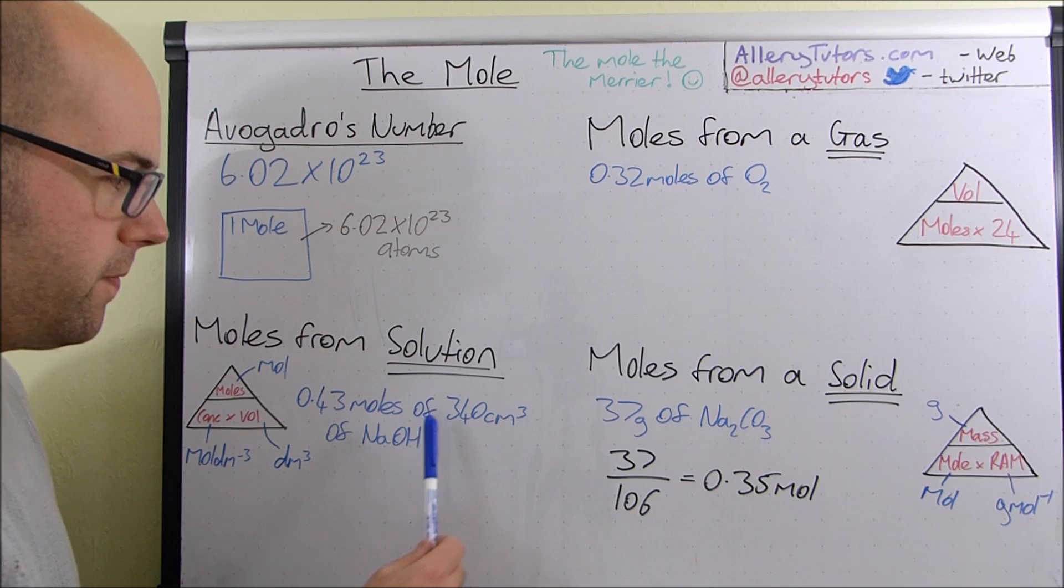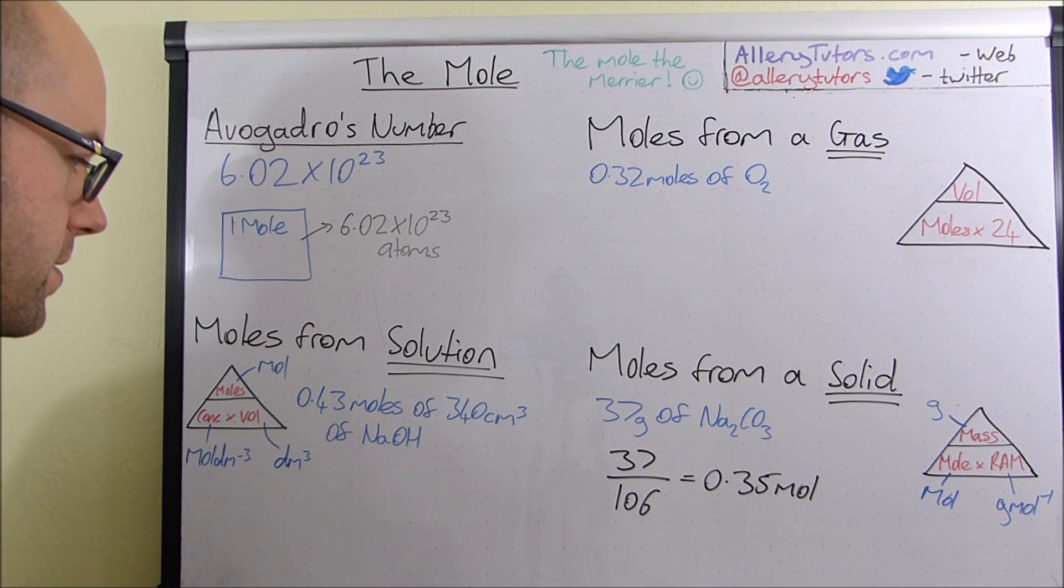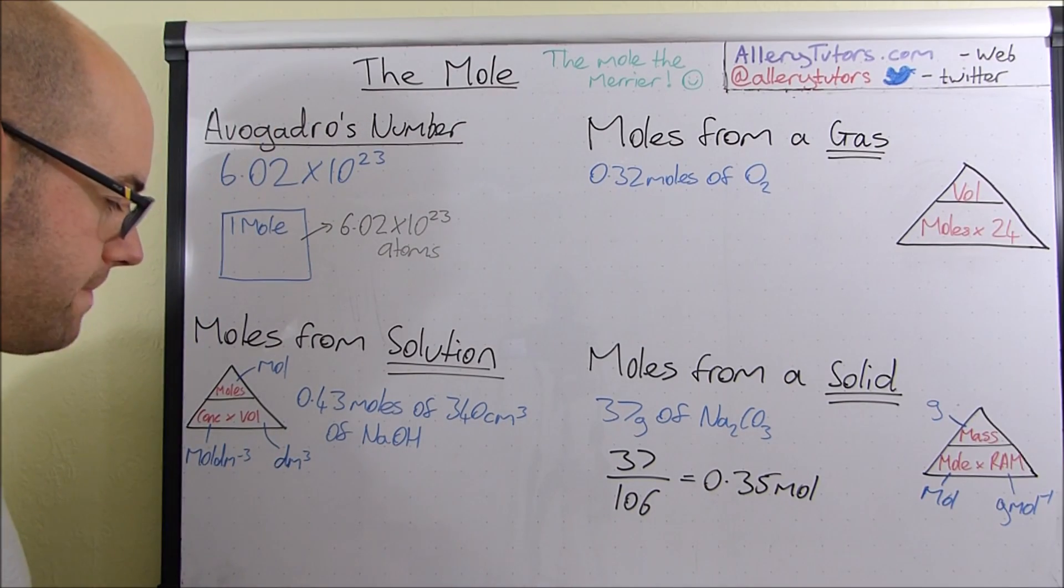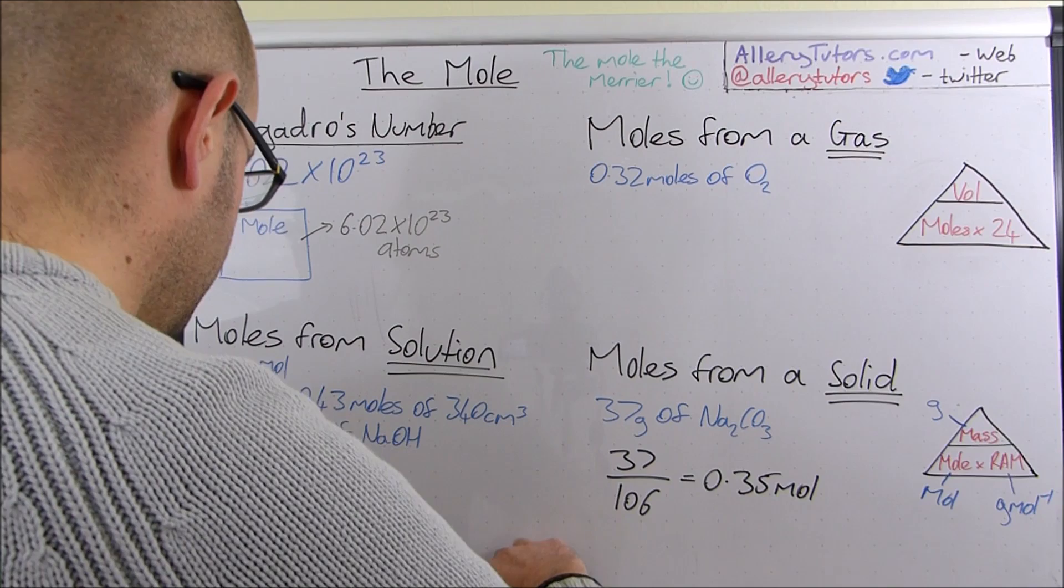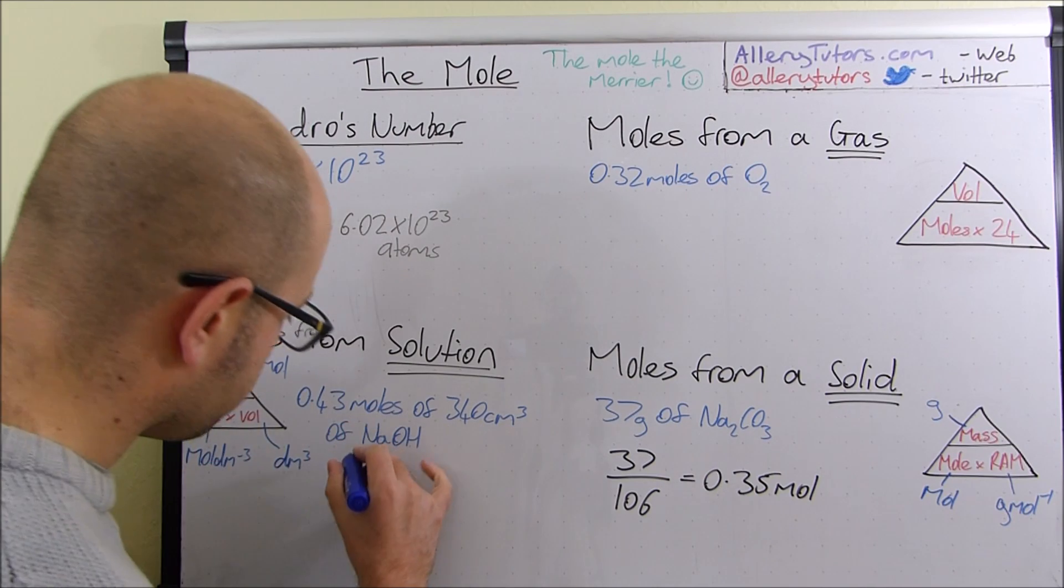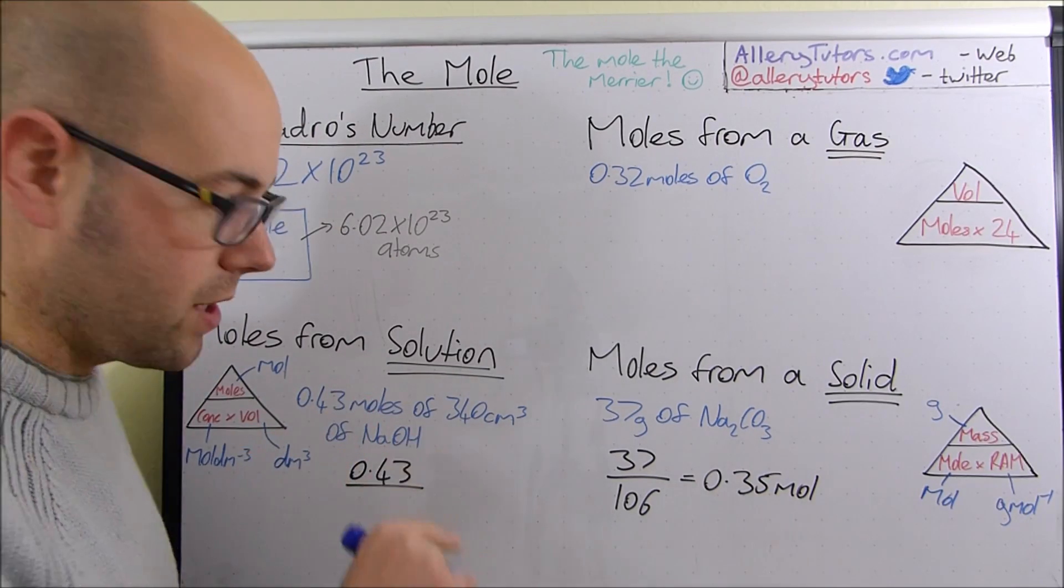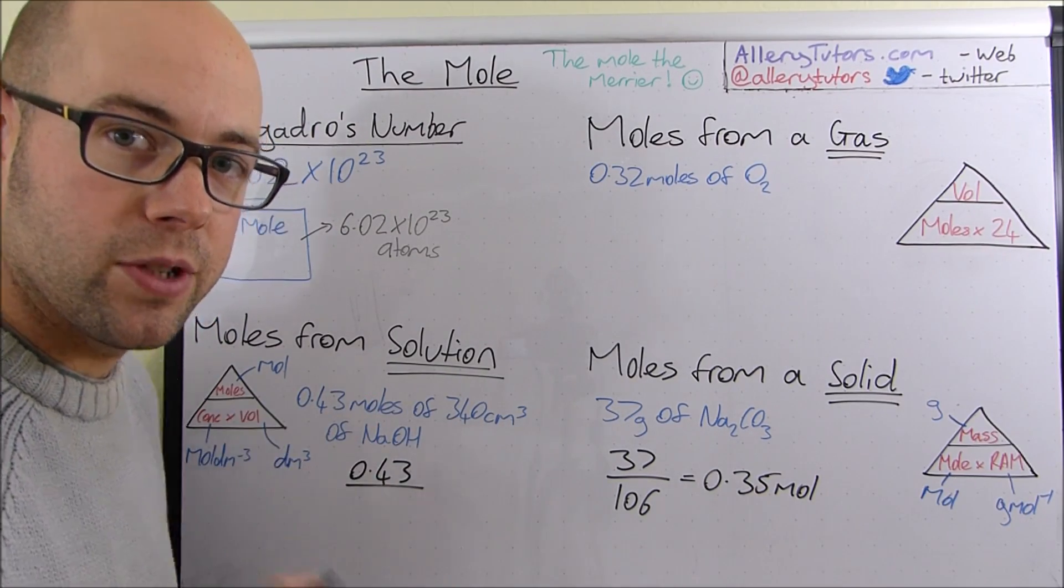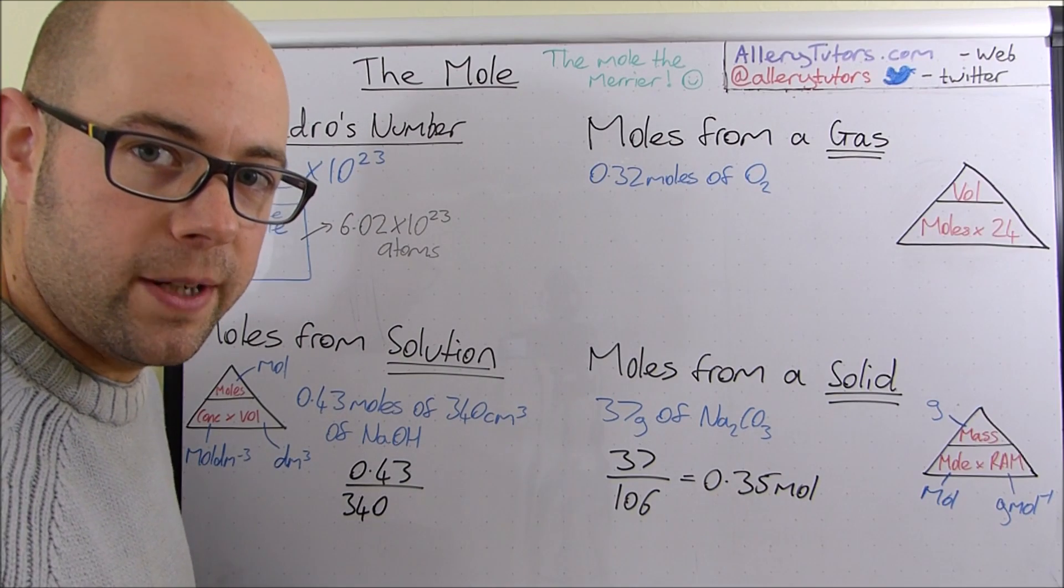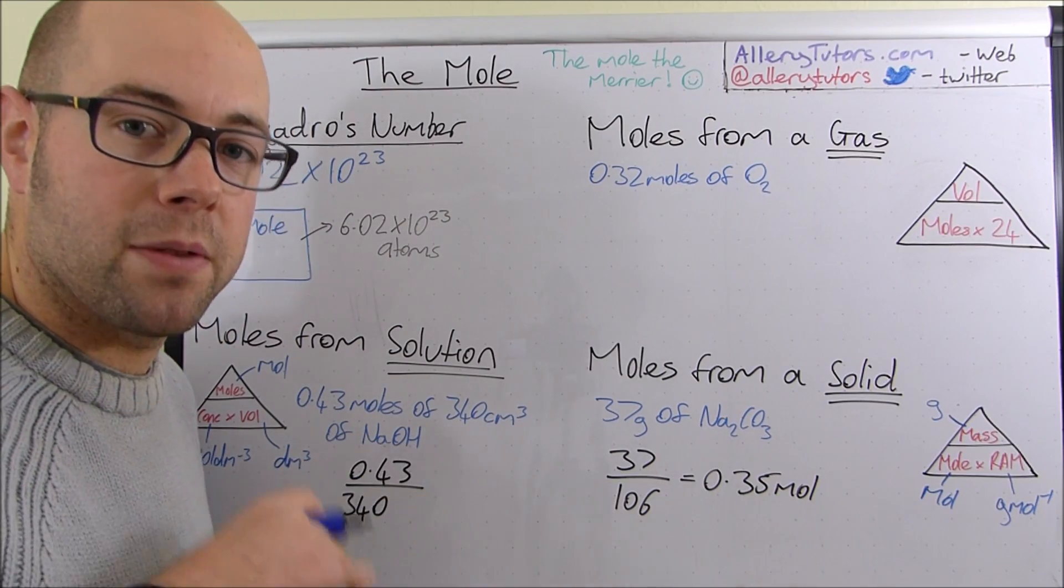Here's the example, we'll put 0.43 moles of 340 centimetres cubed of sodium hydroxide, and so what we want to work out is the concentration of this, so we want to work out how strong this solution is. Okay, so, let's get the black pen. Okay, so the first thing, concentration, if we cover that up, is moles divided by volume. We've been told the number of moles, which is 0.43 moles, divide that by the volume. Now, notice the volume's in centimetres cubed. We have to convert to decimetres cubed. What we can do to make our lives so much easier is if we just put 340, and then just put times by 10 to the minus 3 on the end of that, and that's exactly the same as dividing by a thousand.